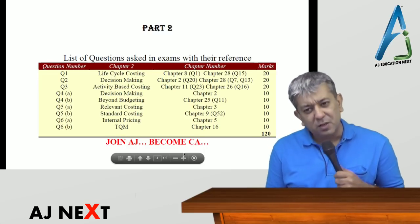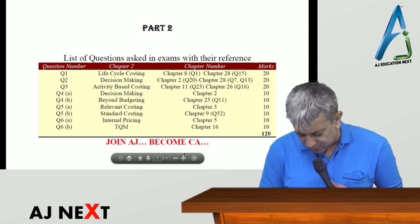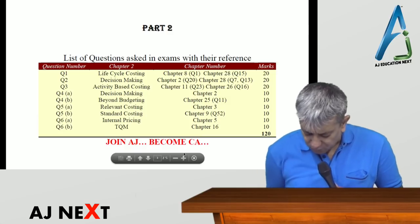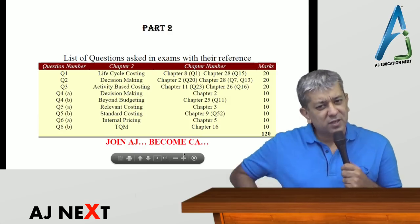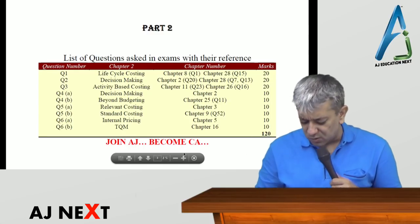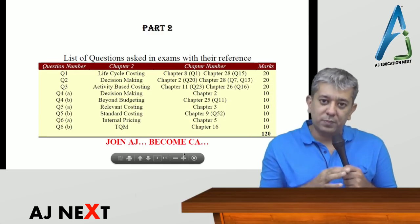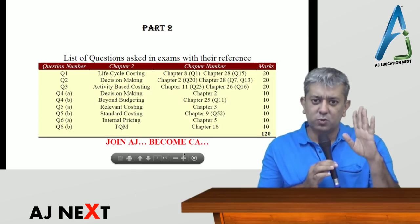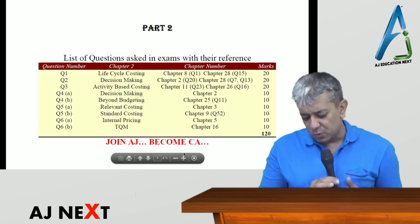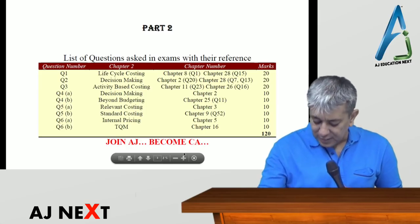Question number 6a was internal pricing — a very easy question as compared to what you all have done. Uske baad question number 6b was total quality management — again a very simple question. Aap log woh padh loge, us se tumhe mil jayega. Yeh tha tumhara break-up — ki tumhara question paper kaisa tha. Totally six questions se aapko five karne the, but first question was compulsory. Har question 20-20 marks ka tha.